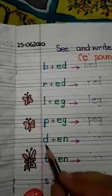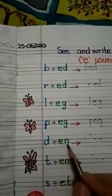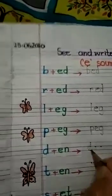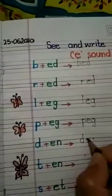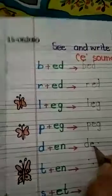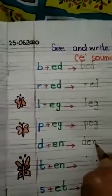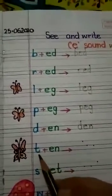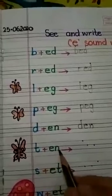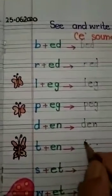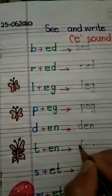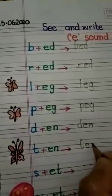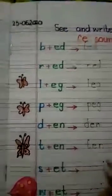Next is D, E, N — den. Write here D, E, N — den. After that T, E, N — ten. Write here T, E, N — ten.